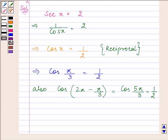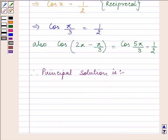This will also give us the value 1 by 2. So that means the principal solution is π by 3 and 5π by 3.